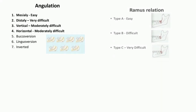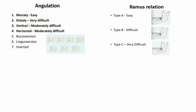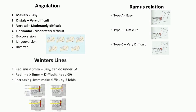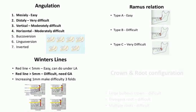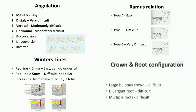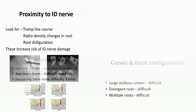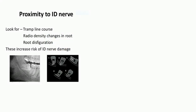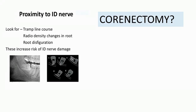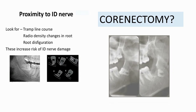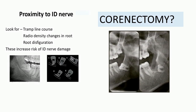The difficulty index is determined based on angulation, ramus relation, Winter's lines, proximity of the inferior alveolar nerve, root configuration, and associated pathology. In cases of proximity to the inferior alveolar nerve, a tramline course, radio-density changes in root, or root disfiguration increases the risk of inferior alveolar nerve damage.